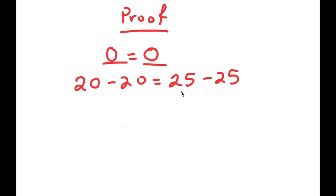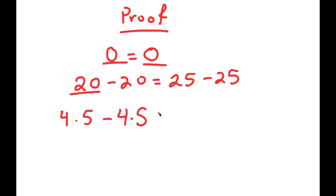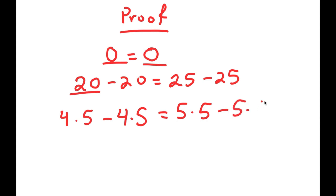From here, I'm going to rewrite 20 as 4 times 5. So now I get 4 times 5 minus 4 times 5 is equal to 25. I'm going to rewrite this as 5 times 5. So I get 4 times 5 minus 4 times 5 is equal to 5 times 5 minus 5 times 5.